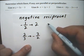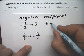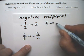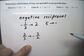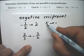If I had a five and I needed the negative reciprocal, the negative reciprocal would be negative because five is positive. And five is the same thing as five on top of one.